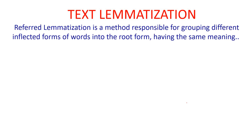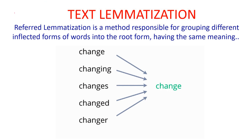That is why another step used is text lemmatization. Text lemmatization is the same as text stemming, but the difference is that the final word recovered has proper meaning. Text lemmatization is a method responsible for grouping different inflected forms of words into their root form having the same meaning. The word is still chopped, but the final word retrieved is a valid, meaningful word. Differentiating between text stemming and text lemmatization is a very common question asked in board exams.